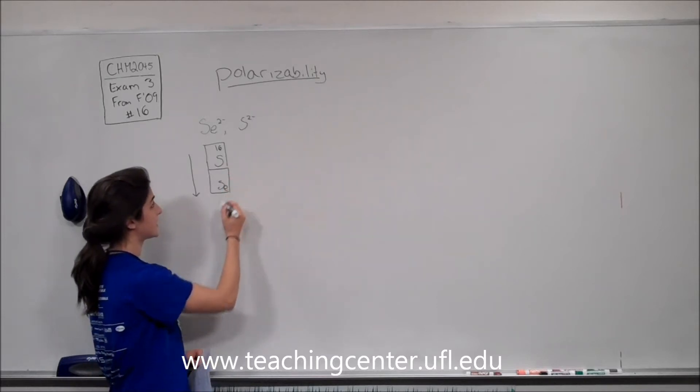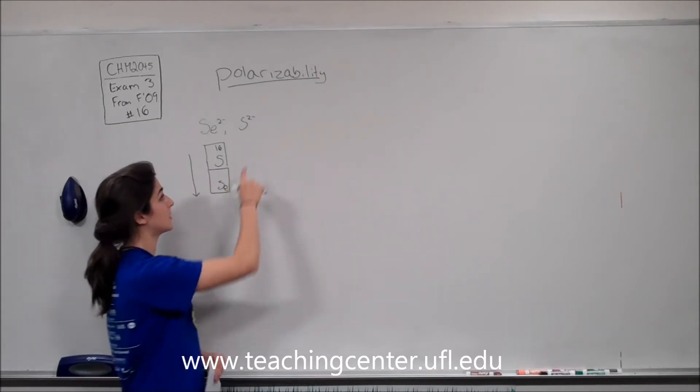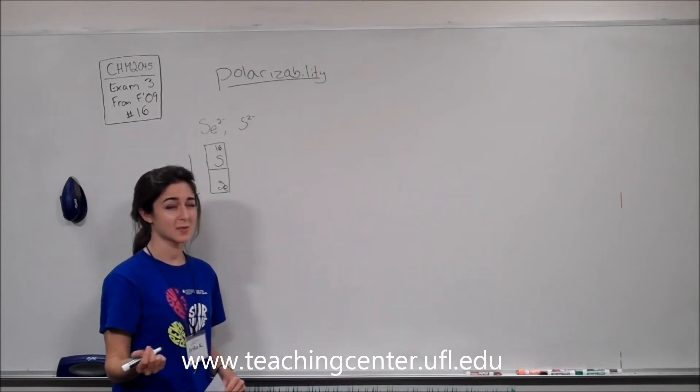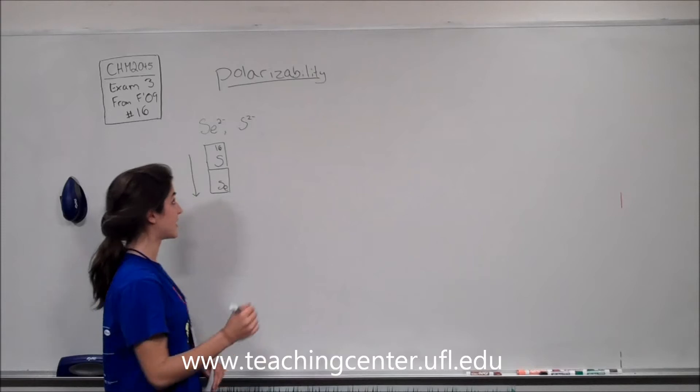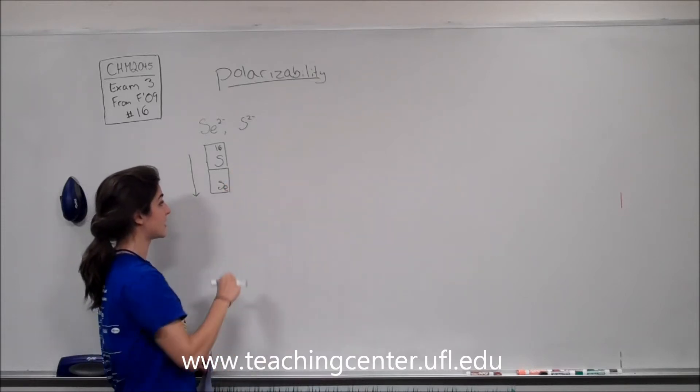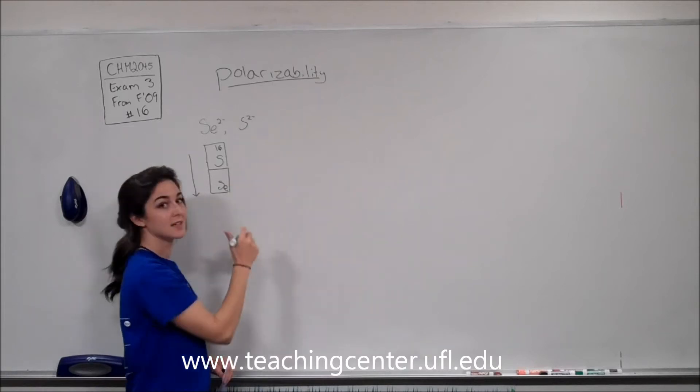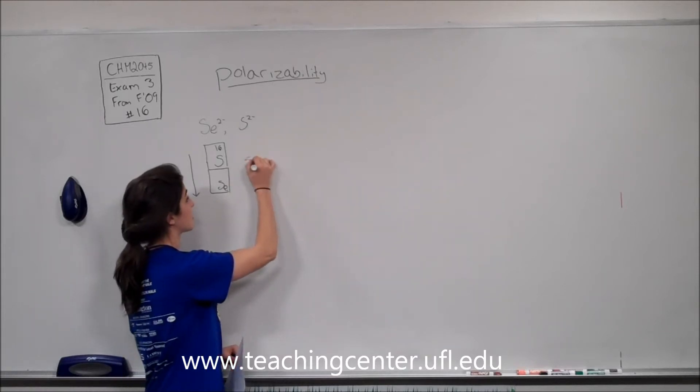So we know that Se is larger than S and because they have the same charge, this means they have the same valence electrons, so we're not going to consider those. Instead we're going to look at the periodic trend. So we know that Se is typically larger than S. So that means Se is more polarizable.